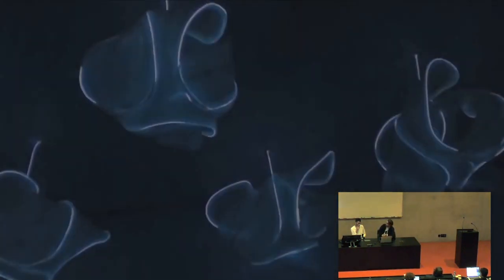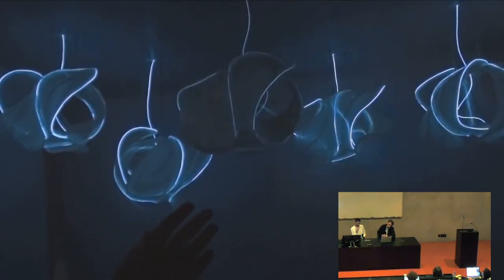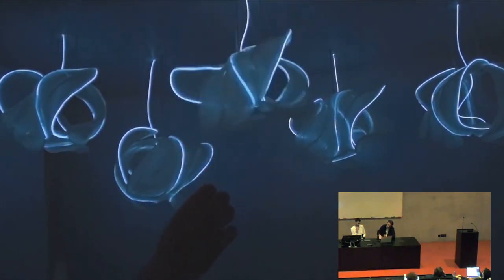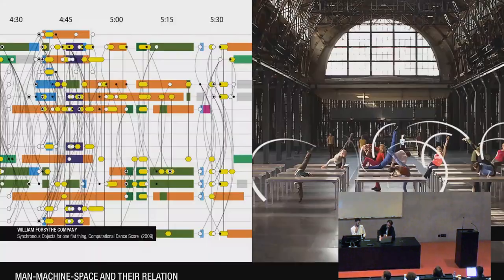One of our studio installations creates, rather than static architecture, a constant behavior that changes with human interaction — it retracts and expands as a human comes in and interacts with it. This shows the construction and detailing of the project. Part of this interaction is rooted in human behavior and human motion itself — we are very interested in motion and movement and constantly try to analyze how we can implement it in our architectural system.